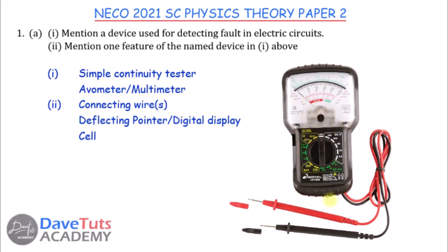Some features of the multimeter include connecting wires shown in red and black, a display — this is an analog display, but some come as digital displays — and a powering cell to power the device. That is the answer to this question.